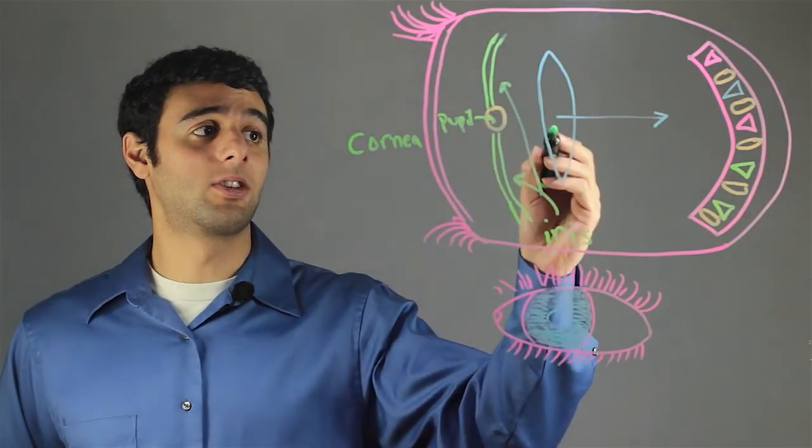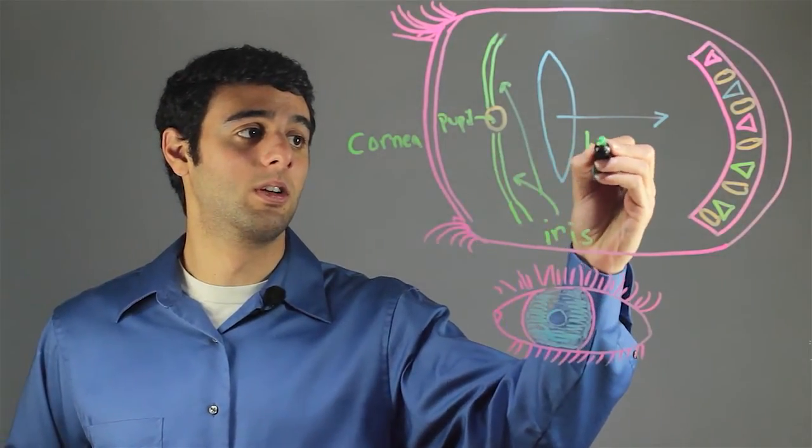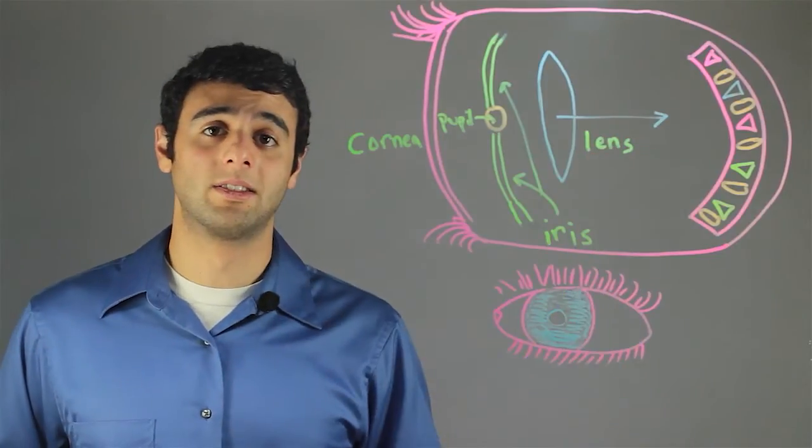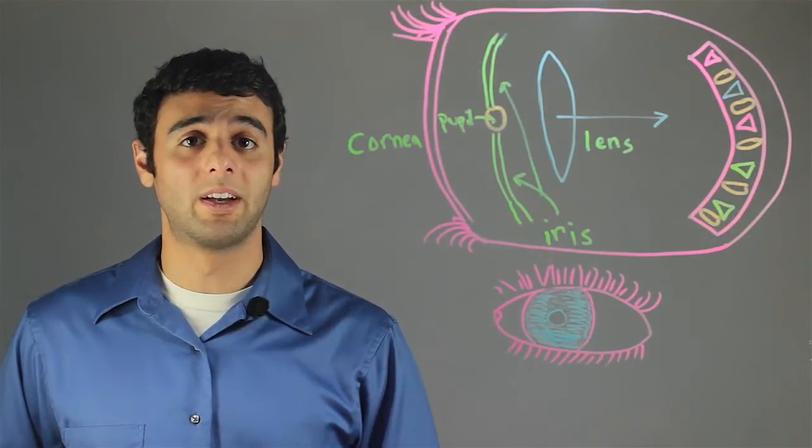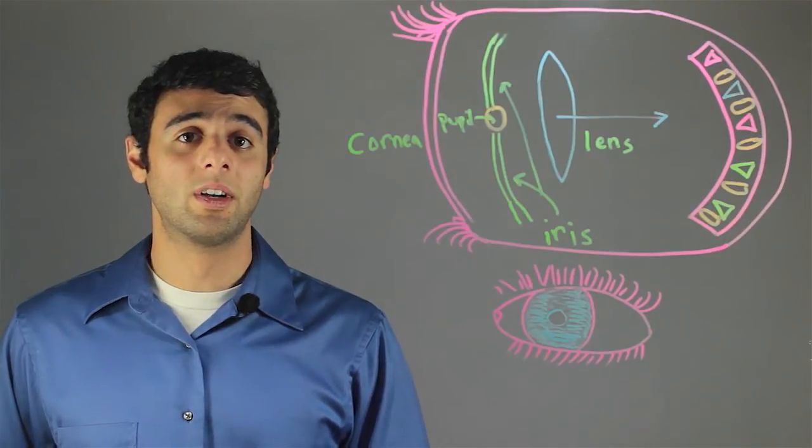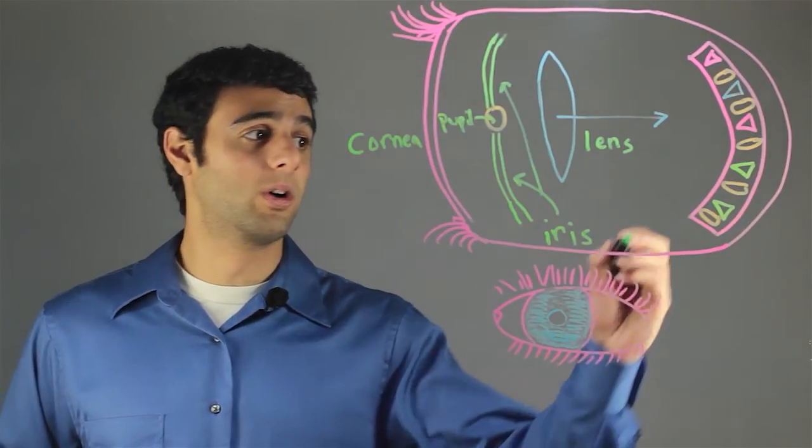The light then travels over to the lens. The lens does a lot of the fine focusing of the light and sends the image over to the back of the eye or the retina.